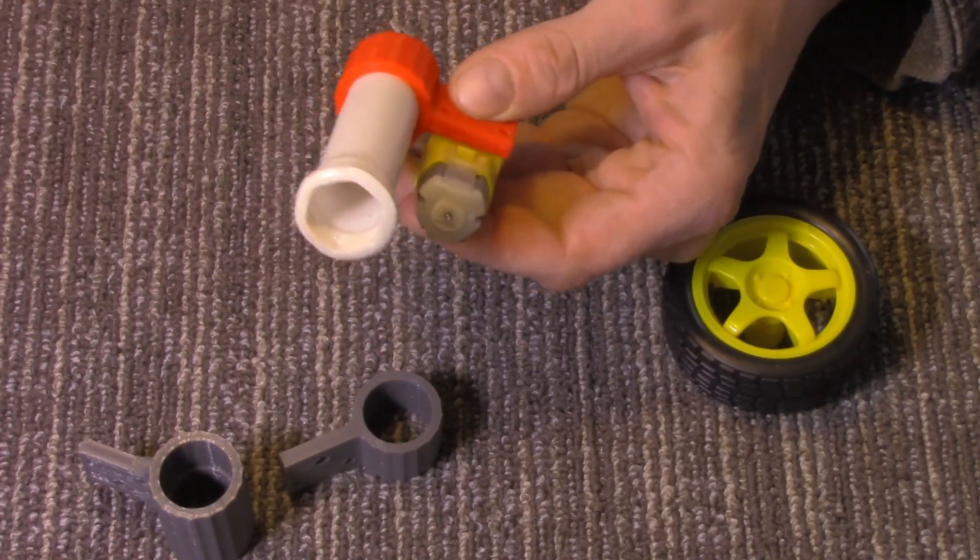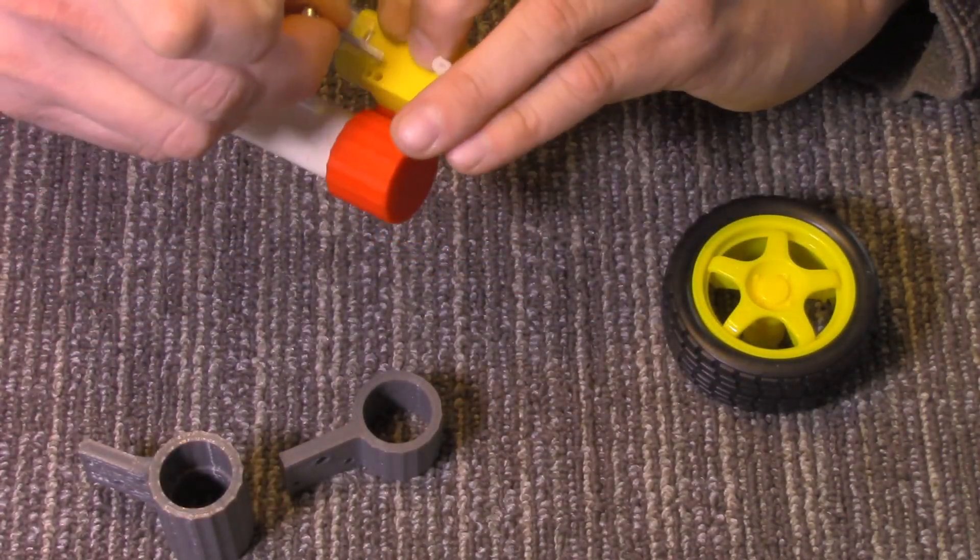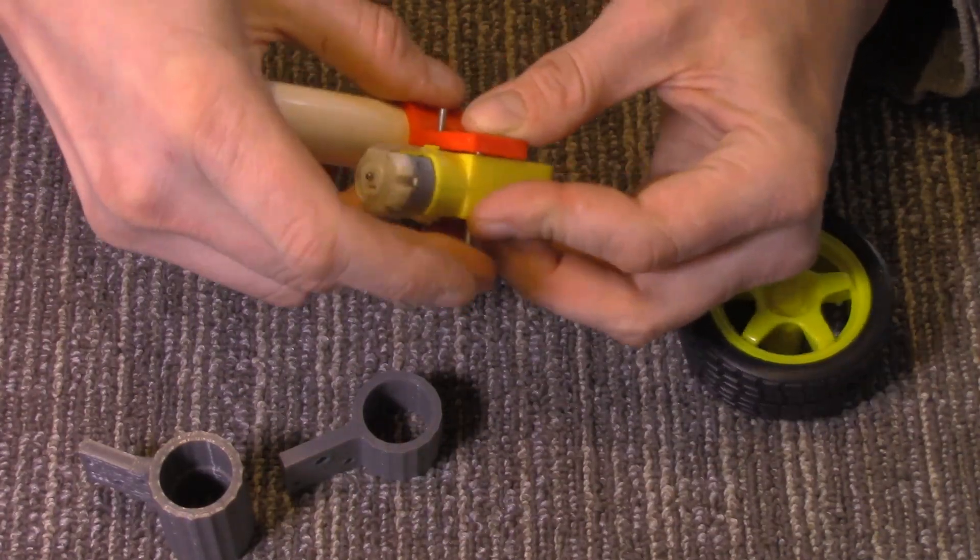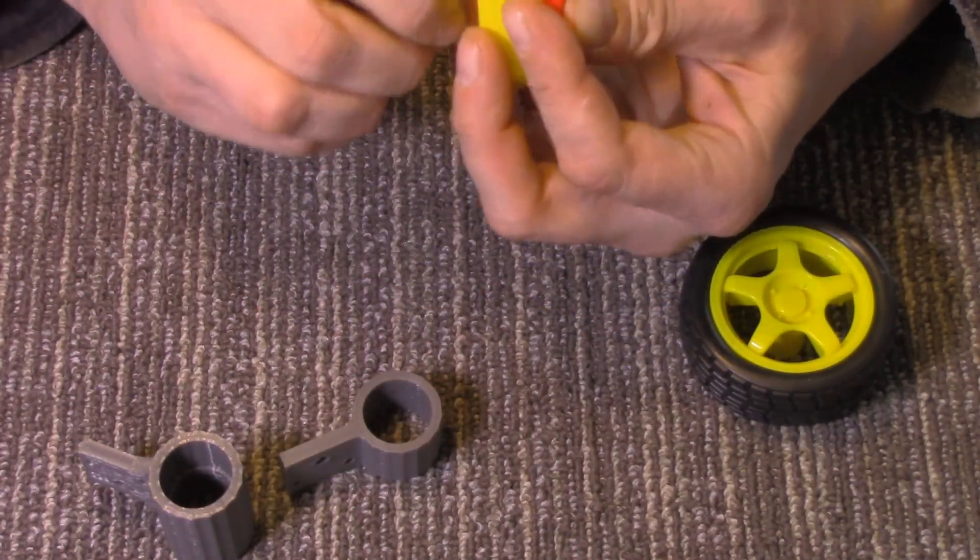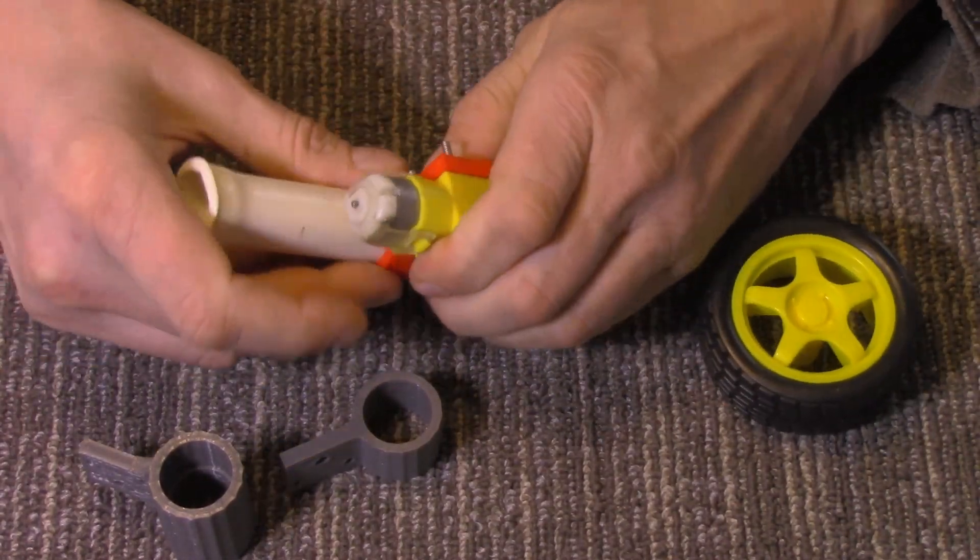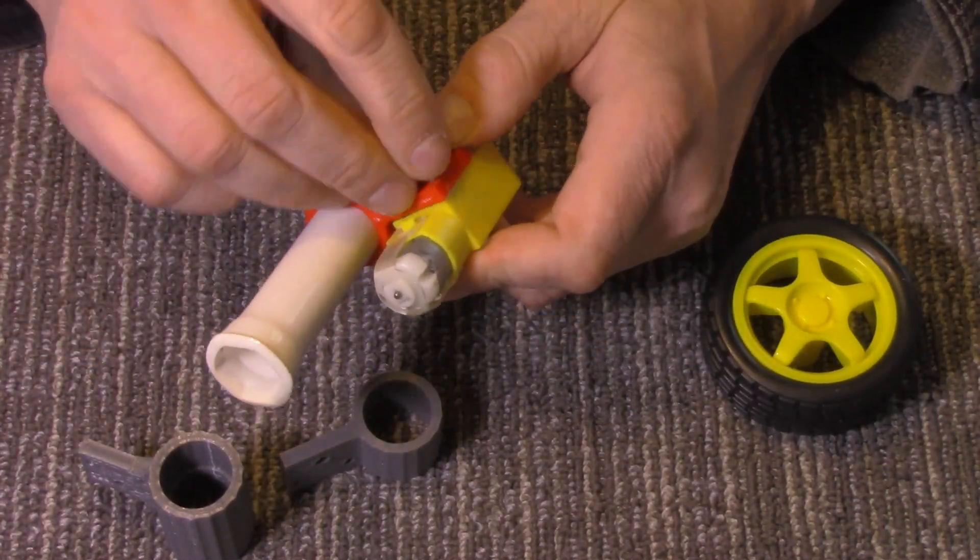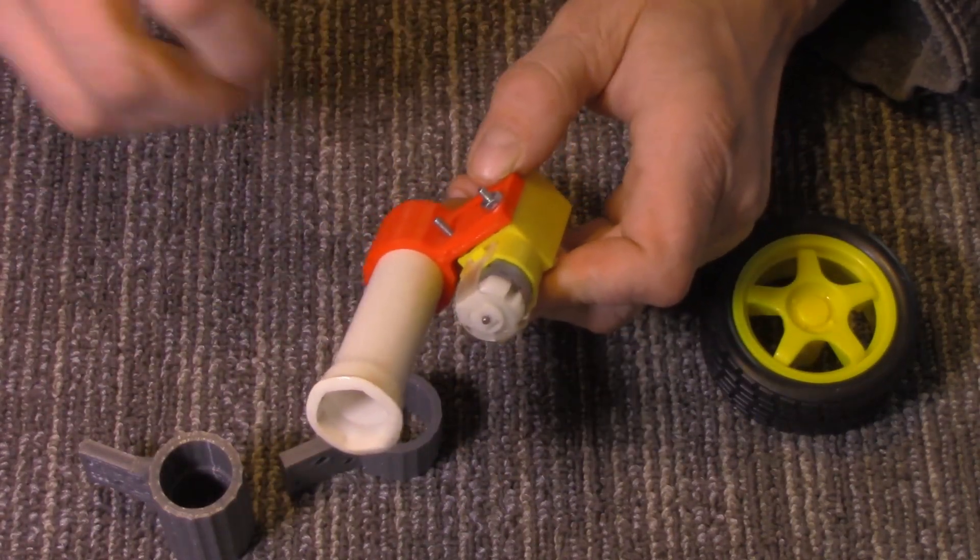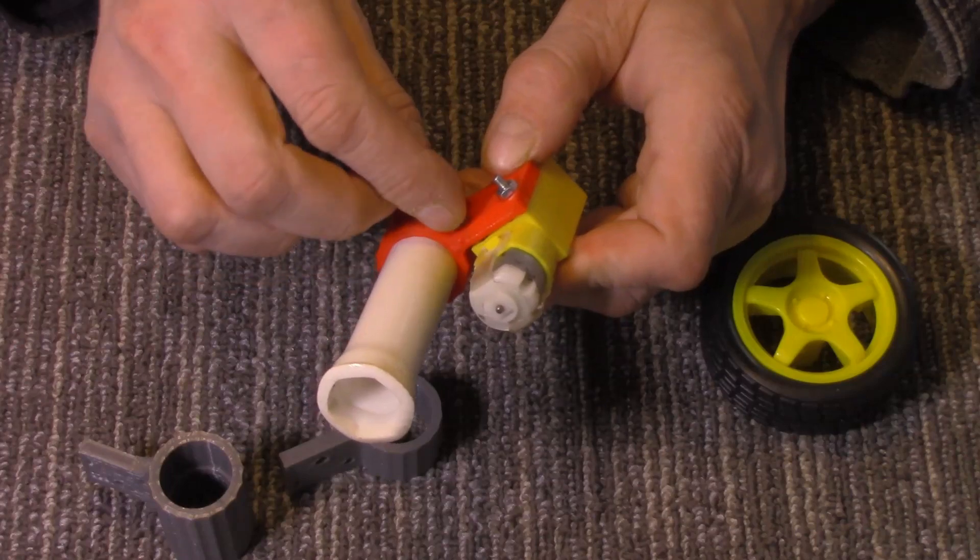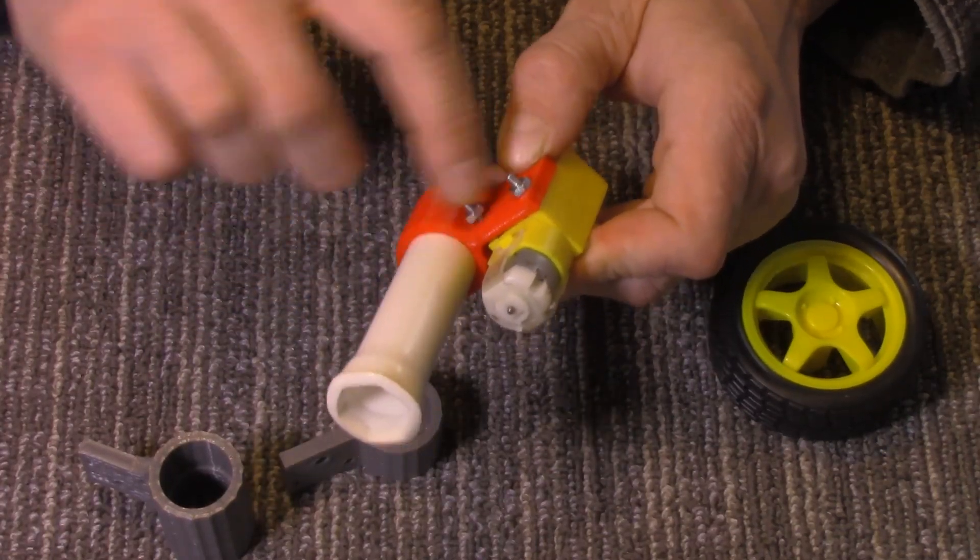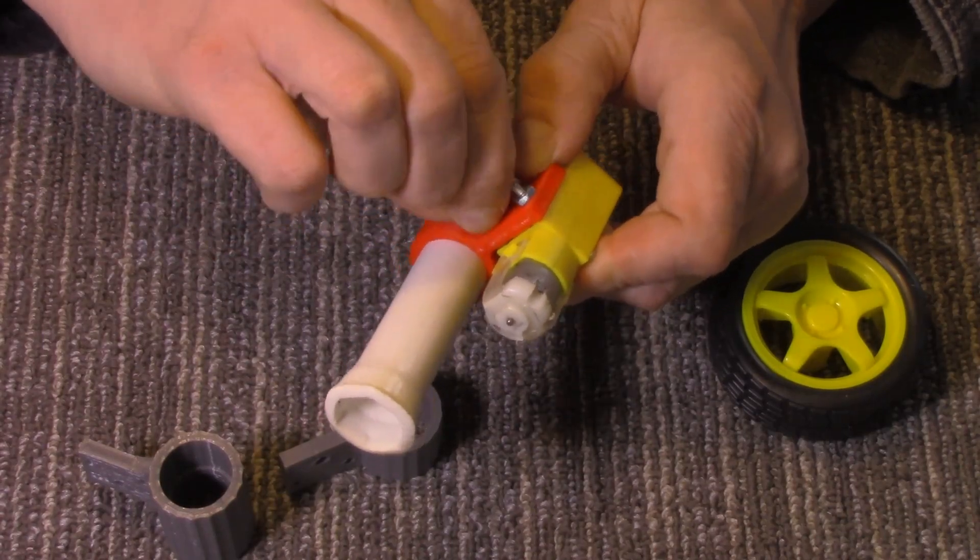And then, of course, you will need two small bolts in there. There we go. And then you will need two small nuts and they all mount the same. It's just the difference in them is where on the PVC it mounts but the motor mounts the same way.